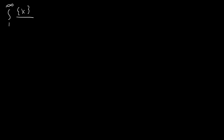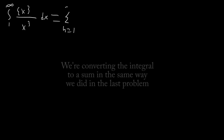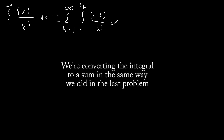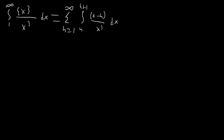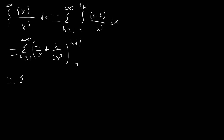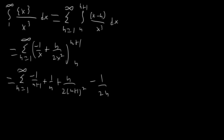The next integral is from 1 to infinity of the fractional part of x over x cubed dx. We jump right into summation notation the same way as before. Integrating: 1 over x squared gives negative 1 over x, and negative n over x cubed integrates to n over 2x squared, evaluated at n plus 1 and n. This gives the sum from n equals 1 to infinity of negative 1 over n plus 1 plus 1 over n, plus n over 2(n+1) squared minus 1/2. The first part is again a telescoping series.